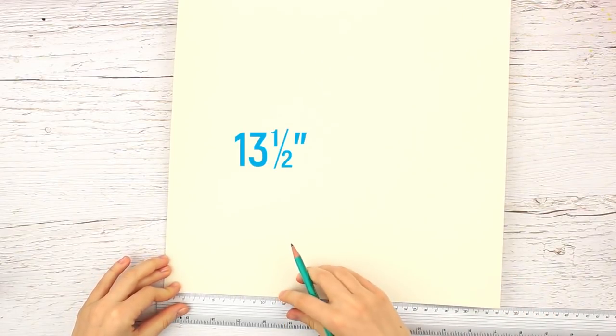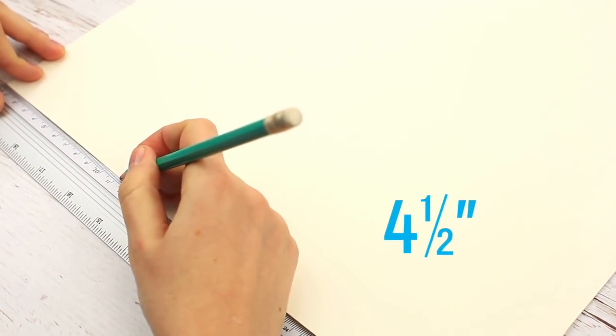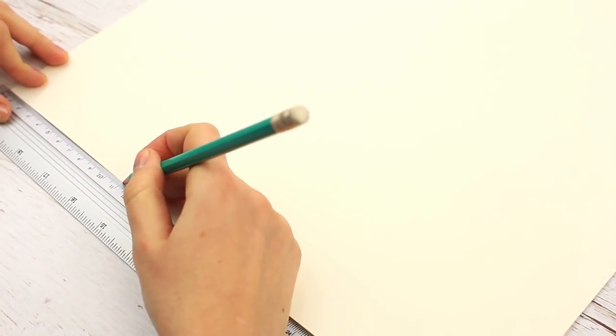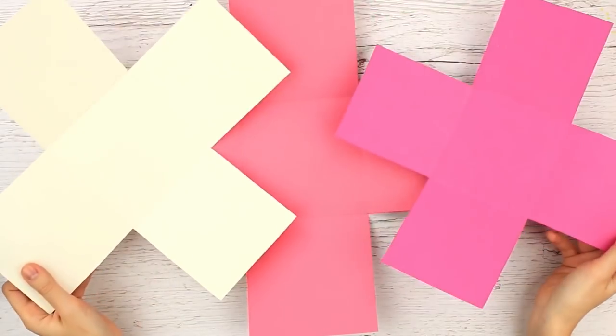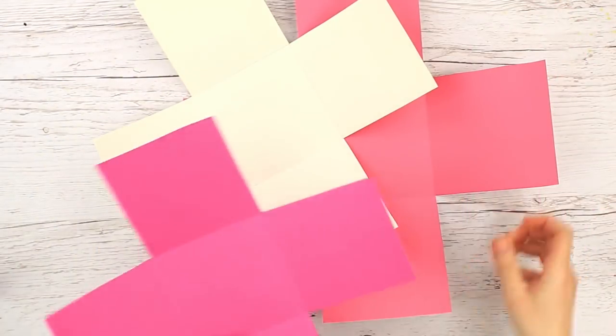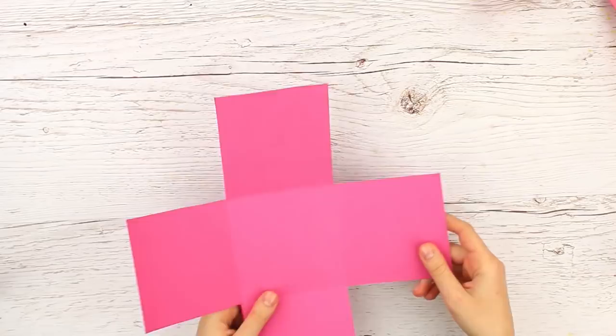Make the middle layer in the same way using a smaller cardstock square. Trim the cardboard to 13 and a half inches. Mark it every 4 and a half inches. We'll need 3 identical plus sign layers. The measurements are getting smaller each time.